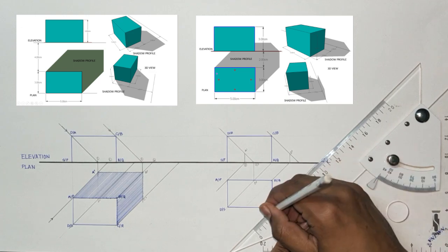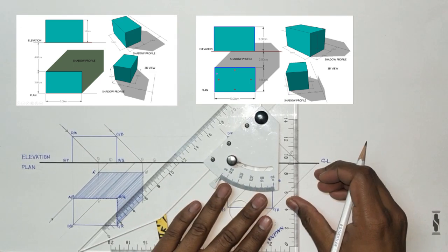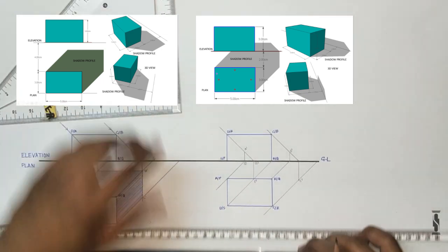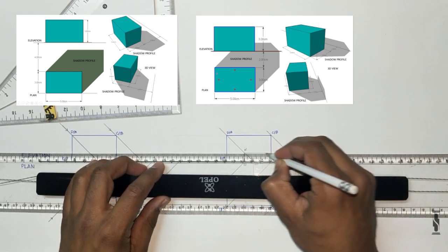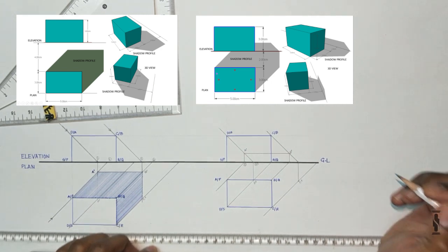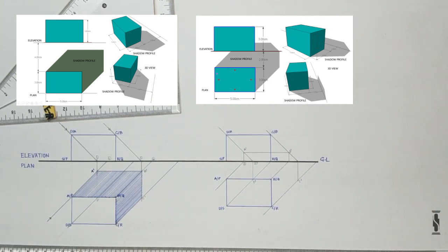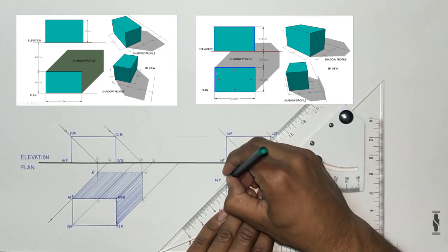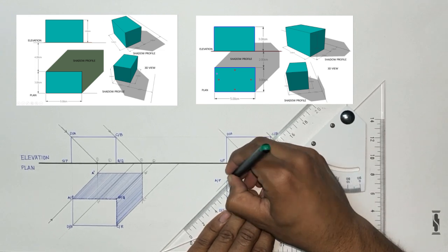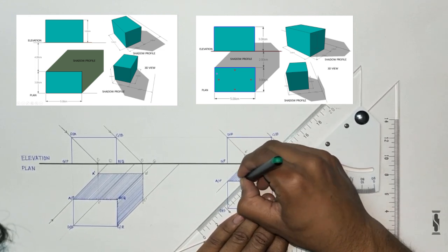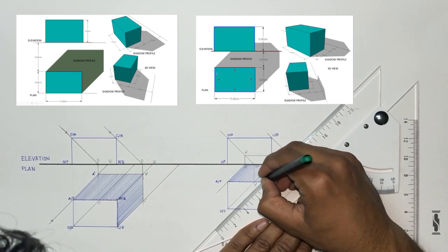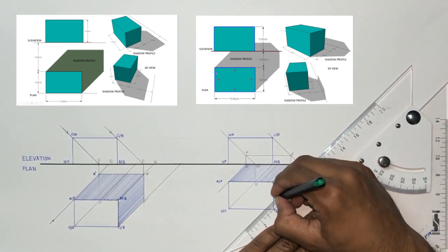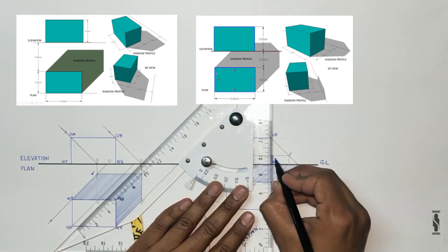The object rests on surface PQRS on the ground, so the shadow of the object will start from the base PQRS. Now join the points P, A dash, B dash, C dash, and R to get the profile of the shadow. The shadow of point D lies in between the shadow of points A, B, and C, so it will merge into that shadow. Hatch the shadow profile with low intensity lines to get the final output. Note that some portion of the shadow is hiding behind the elevation of the object, so there is no need to draw the hatch for that portion.